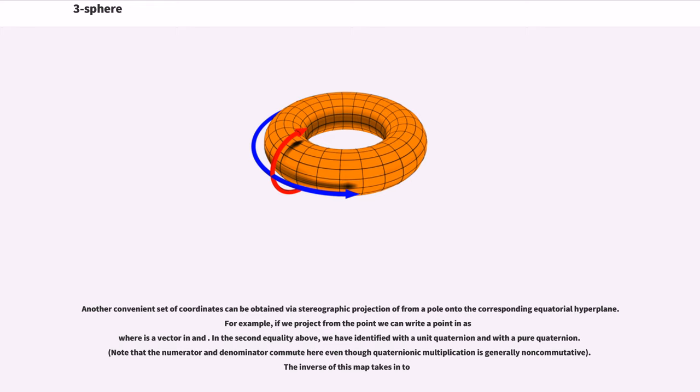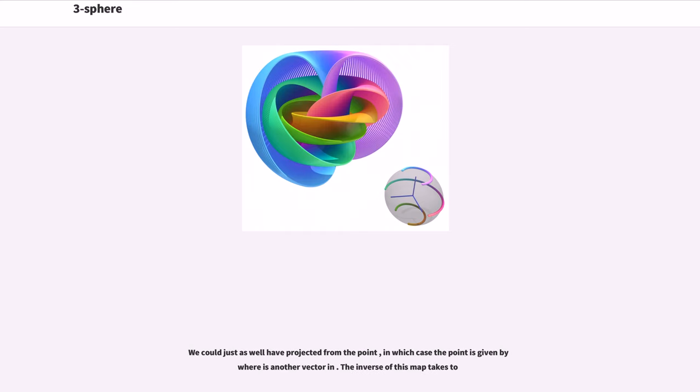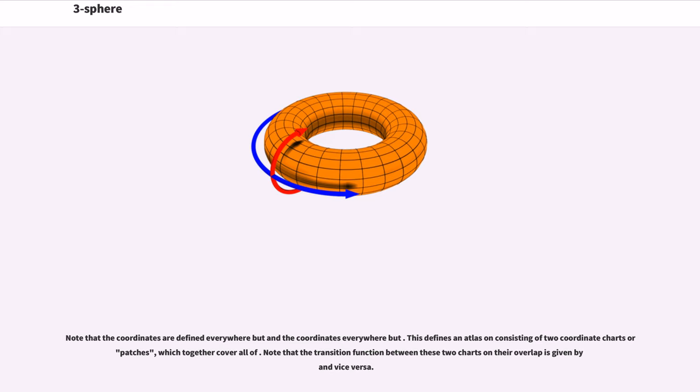Another convenient set of coordinates can be obtained by stereographic projection of from a pole onto the corresponding equatorial hyperplane. For example, if we project from the point we can write a point in as where is a vector in and. In the second equality above, we have identified with a unit quaternion and with a pure quaternion. The inverse of this map takes into. We could just as well have projected from the point, in which case the point is given by where is another vector in. The inverse of this map takes to. Note that the coordinates are defined everywhere but; in the coordinates everywhere but. This defines an atlas on consisting of two coordinate charts or patches, which together cover all of. Note that the transition function between these two charts on their overlap is given by and vice versa.